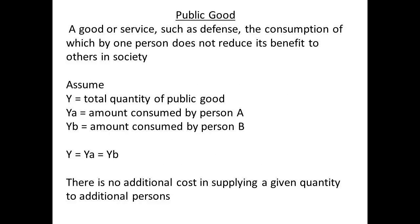A public good is defined as one where the consumption by one person does not reduce the benefits to others in the society. An example of a public good in this sense would be defence. If we let Y equal the total quantity of the public good, and YA equal the amount consumed by person A, and YB the amount consumed by person B, then Y equals YA equals YB. In other words, there is no additional cost in supplying a given quantity to an additional person.